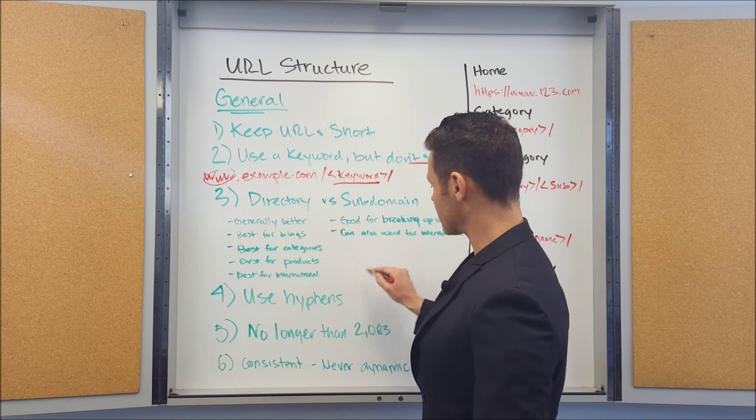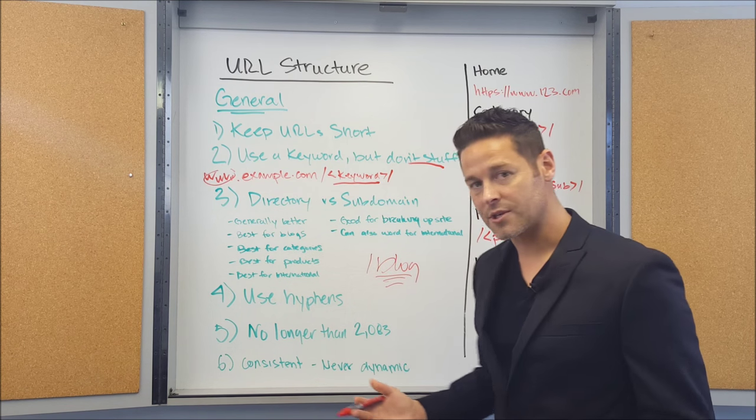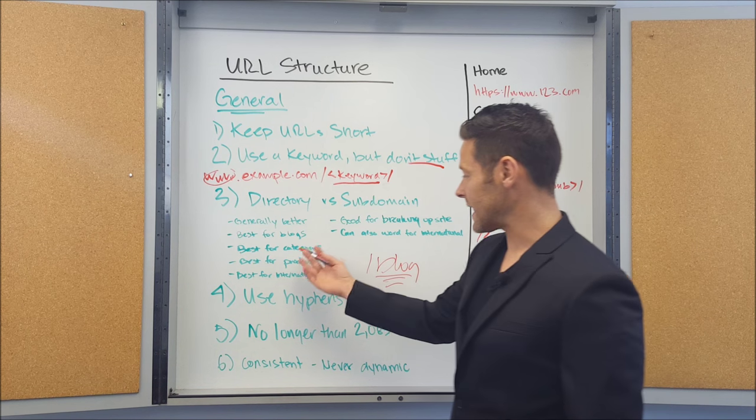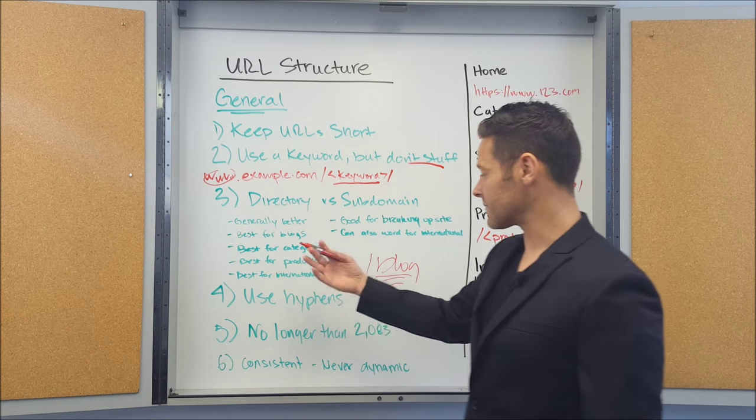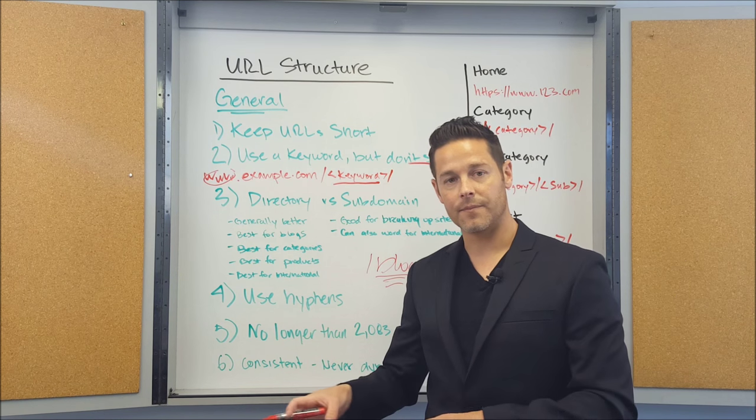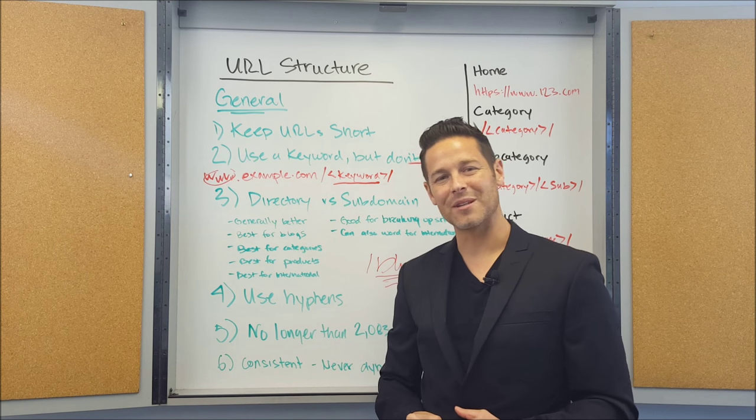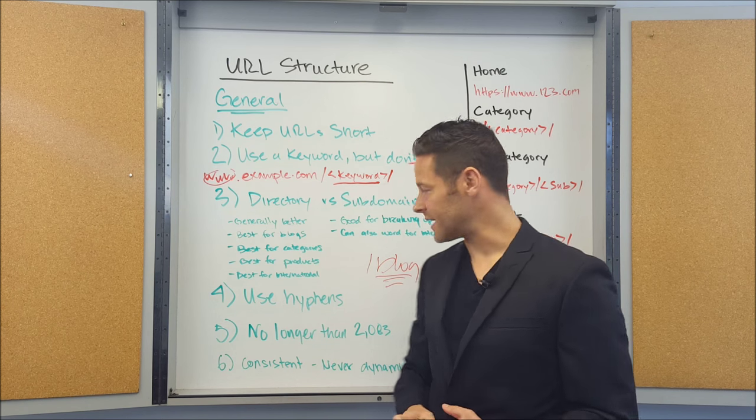Directories are generally best for blogs too. So example.com forward slash blog, right? Your blog should be on a directory structure. Also best for categories, best for products, best for international. You can do international, I'll talk about that in a moment on a subdomain, but it doesn't always really work the best. And I'll talk a little bit about that.